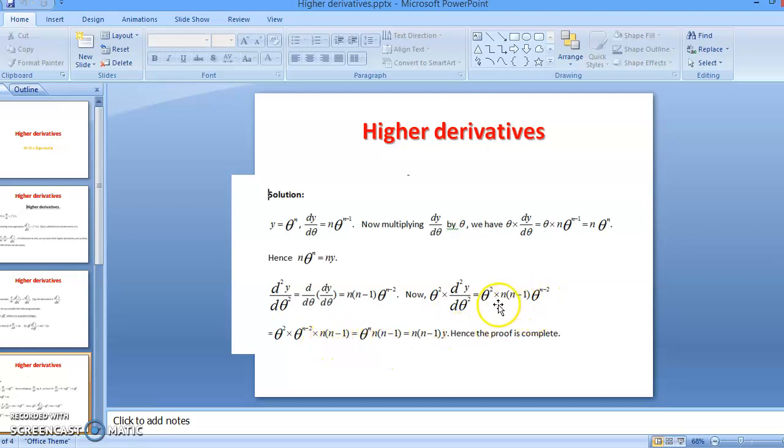That is just collect like terms and multiply. So that would give us what? According to the law of indices, θ² multiplied by θ^(n-2) would give θ^(2 + n - 2), that would give θ^n multiplied by n(n - 1), which is equal to what? Because originally in the given problem, y equals θ^n, so by the time we now substitute for y here, we will have y into n(n - 1), which is the same thing as n(n - 1)y, and the proof is complete.